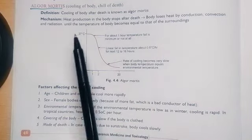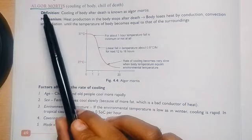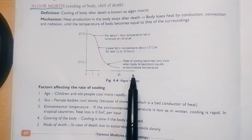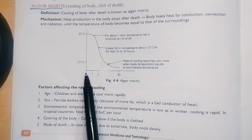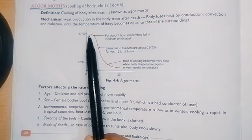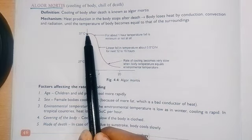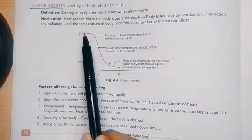This is a graph given to explain algor mortis. On the y-axis are the temperatures and the x-axis is time. After one hour after death, the temperature loss is minimal. For about one hour, temperature fall is minimal or not at all. See, the curve is so linear, so the temperature loss is very less.